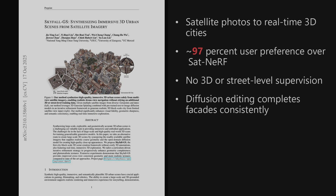Wrapping up, two takeaways stand out. Skyfall GS fuses satellite-driven geometry with diffusion editing to produce cross-view consistent, explorable 3D cities in real time, and it does so without costly 3D supervision. The broader implication is accessible urban simulators for mapping, robotics, and media, though compute and extreme close-ups remain limits.